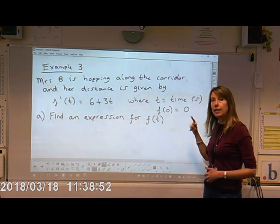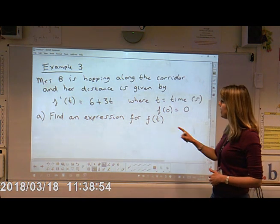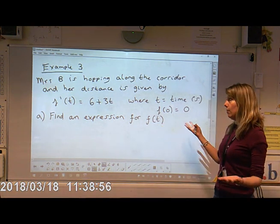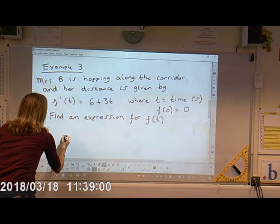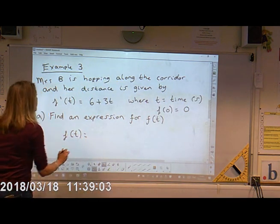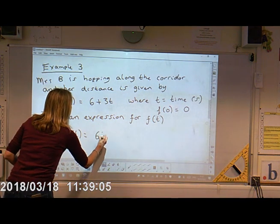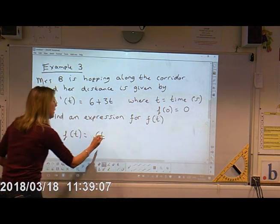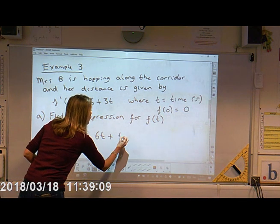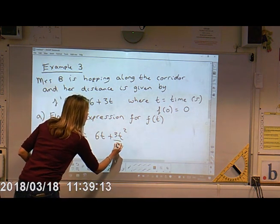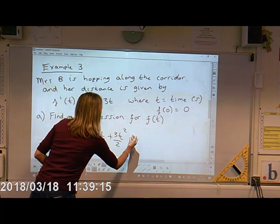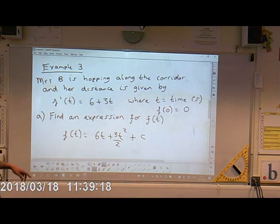You need to find what C is later. So first of all, find an expression for the function of T. All we've got to do is integrate this. So I'm looking here, six T plus T squared, divide that by two, plus C.